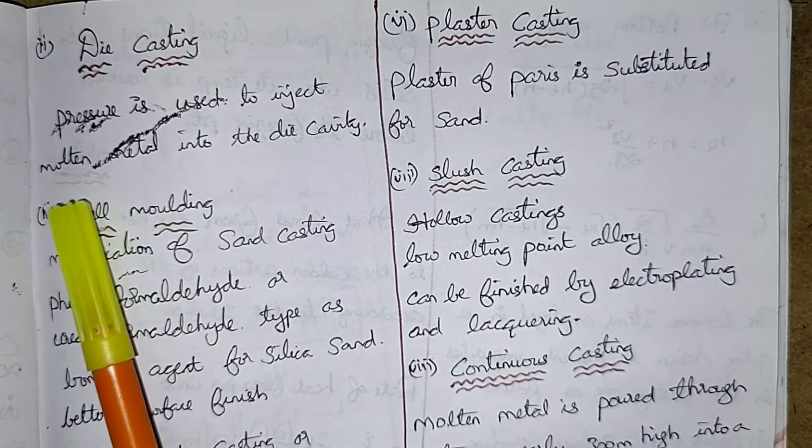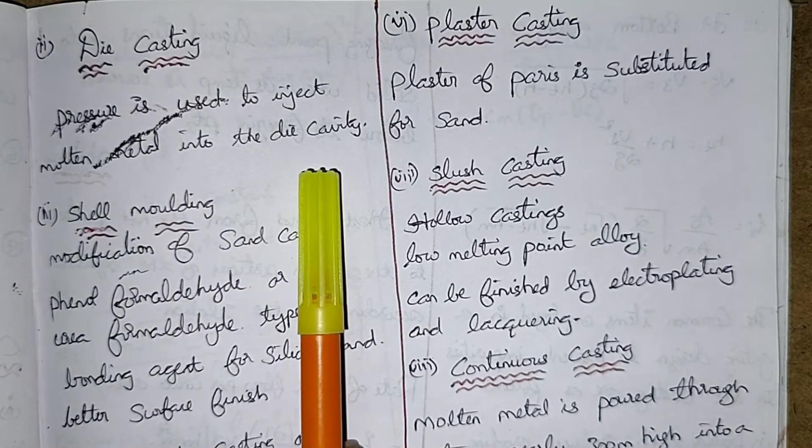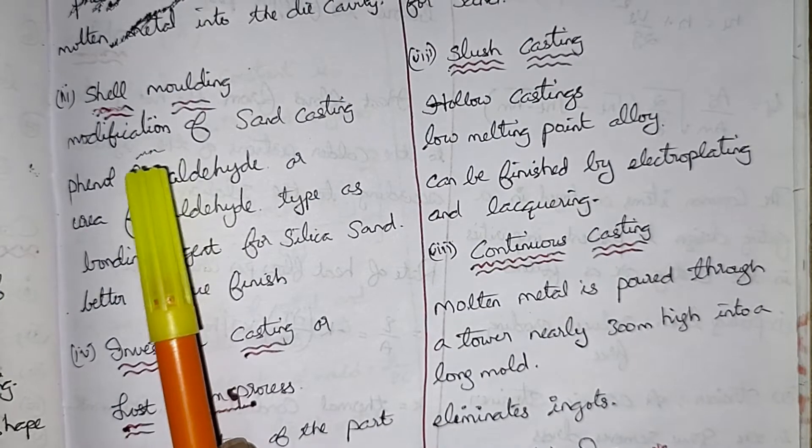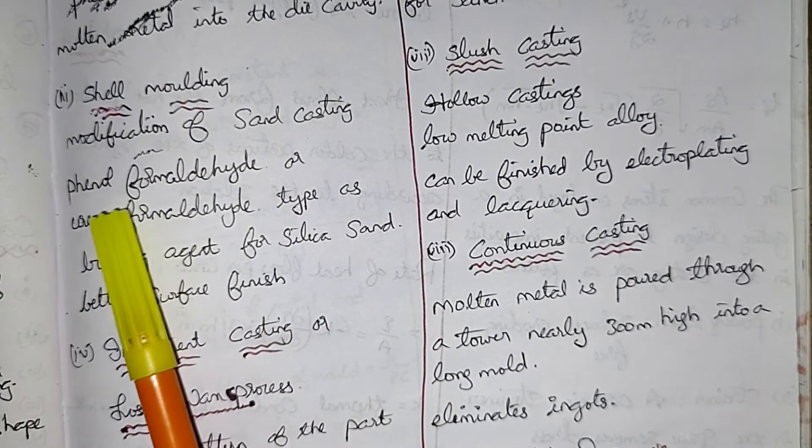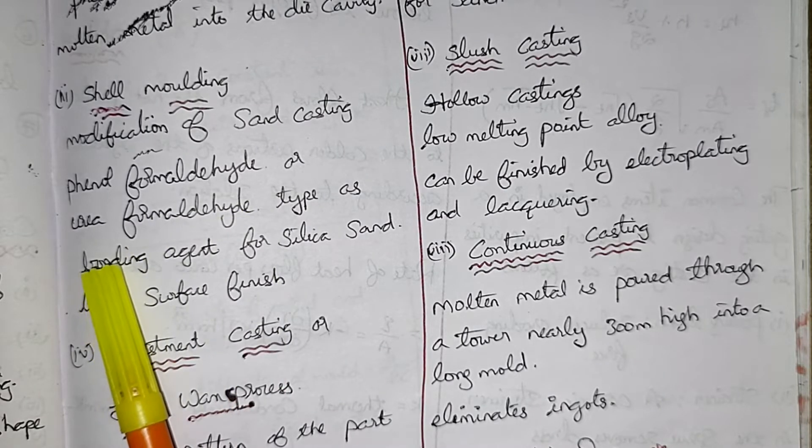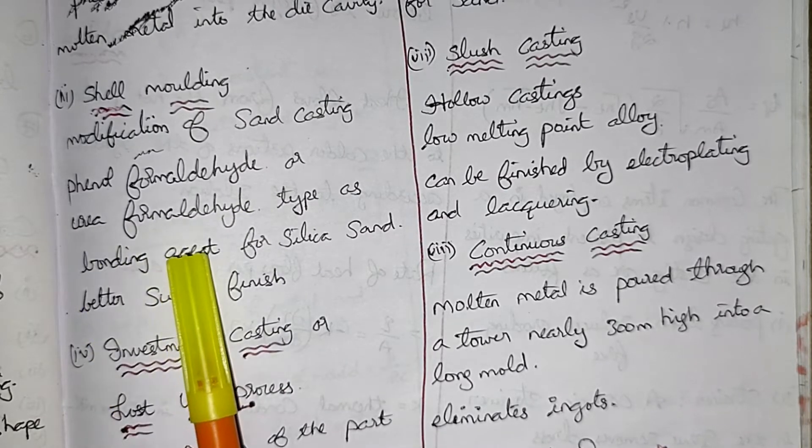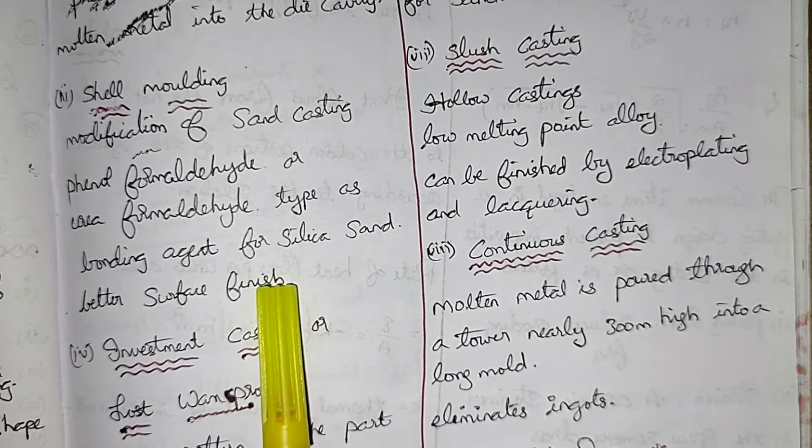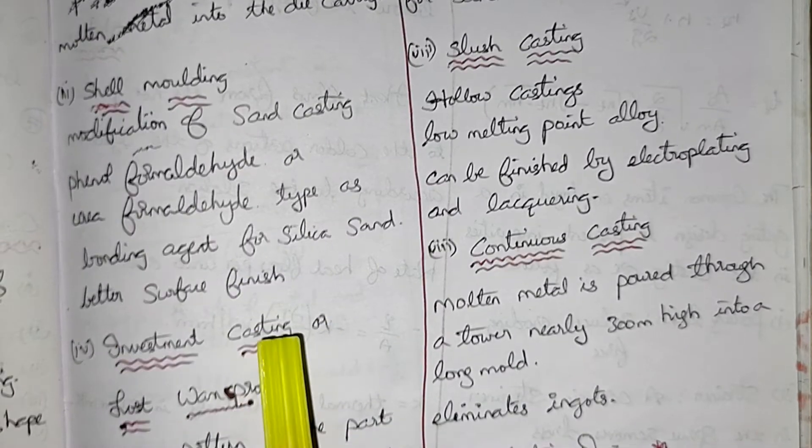And shell molding - modification of sand casting. Phenol formaldehyde or urea formaldehyde type as bonding agent for silica sand. Better surface finish.